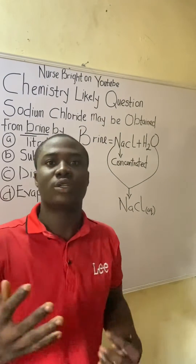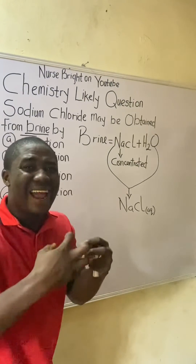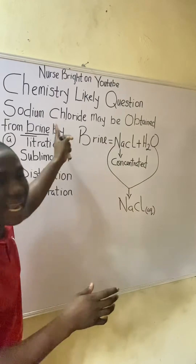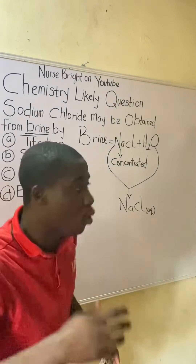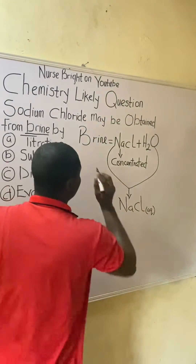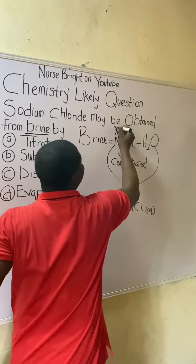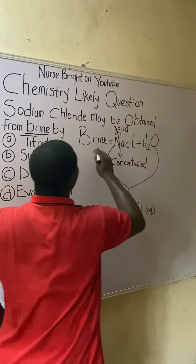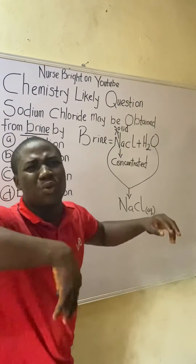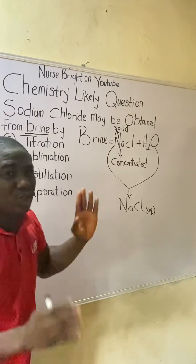Sublimation is a separation technique, but it cannot be used here. Sublimation works on the principle of converting a substance directly from solid state to gaseous state. In this question, no one mentioned converting sodium chloride from solid to gas, so sublimation is ruled out.